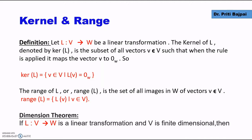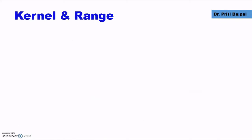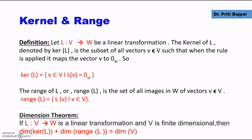Coming to the dimension theorem. Let's say we have a linear transformation L from a vector space V to W, with kernel L and range L. Then the dimension theorem states that dimension of the kernel L plus dimension of the range L equals the dimension of the vector space V.